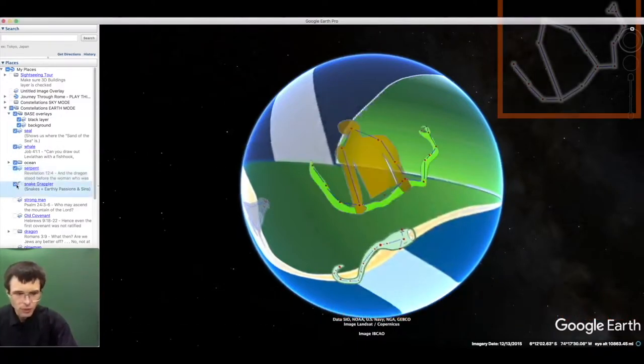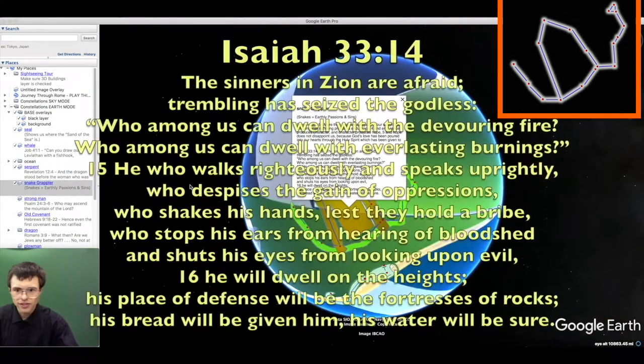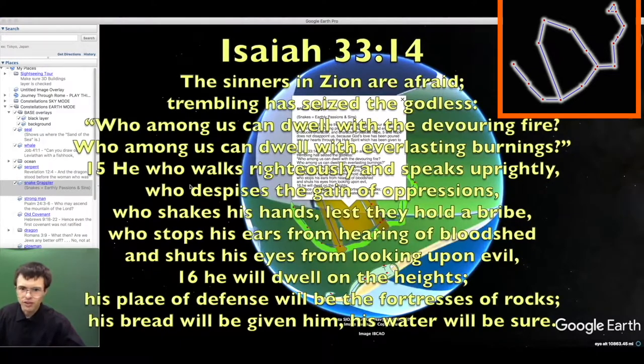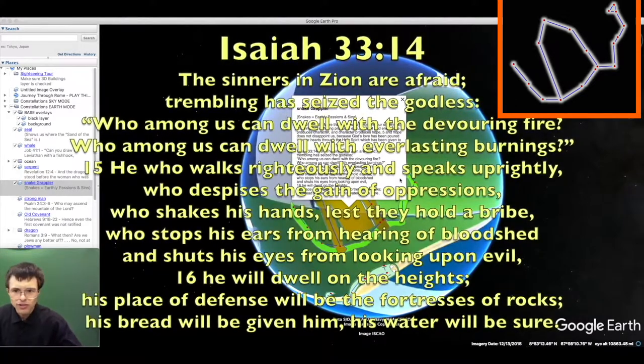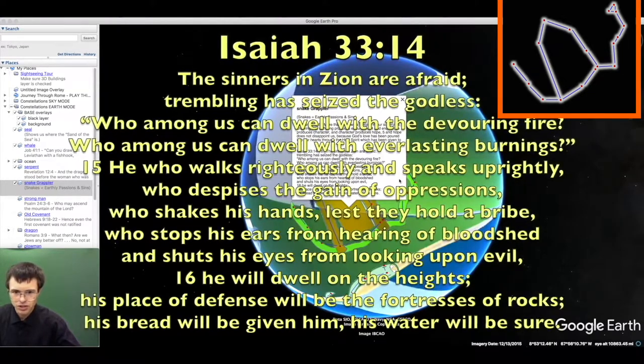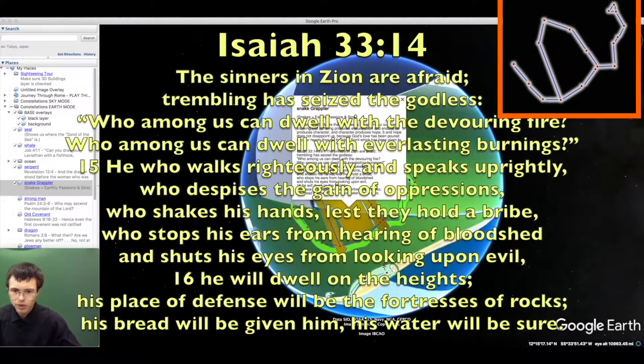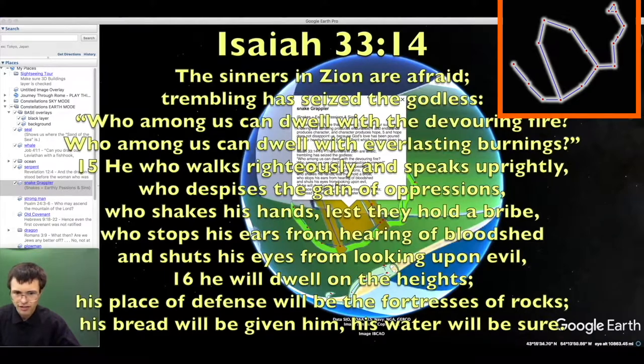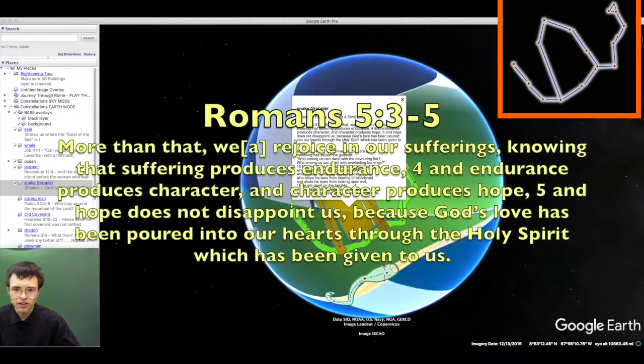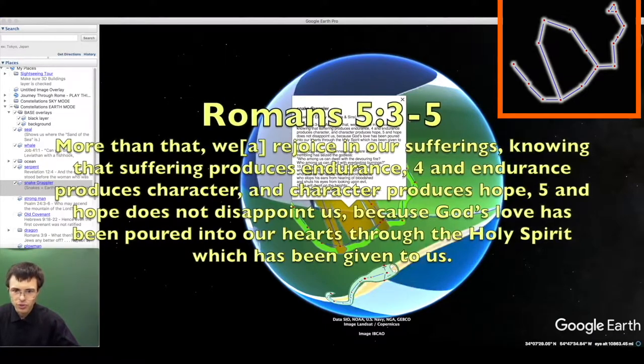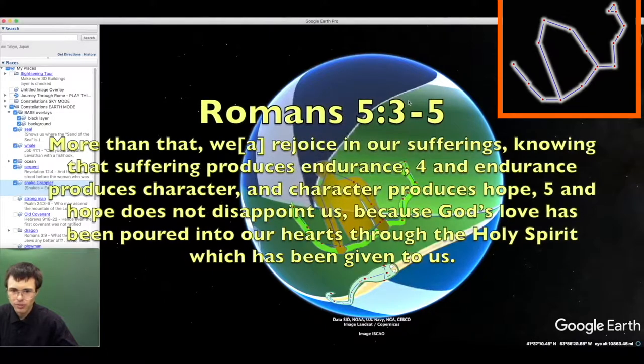This serpent also symbolizes the dragon, because it is said that the devil went into the serpent to tempt Adam to sin. As a result of original sin, we humans are struggling with our passions, and sometimes it bites us and we commit sins. The sinners in Zion are afraid. Who among us can dwell with the devouring fire of God? Who among us can dwell with everlasting burnings? He who walks righteously and speaks uprightly. He will dwell upon the heights. Even Christians must still struggle with these passions. But more than this, we rejoice in our sufferings. Knowing that suffering produces endurance, and endurance produces character, and character produces hope. And hope does not disappoint.